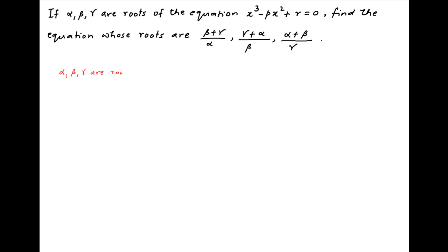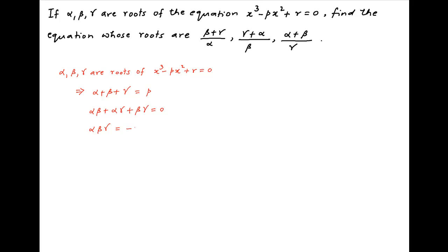We are given that alpha, beta and gamma are roots of the equation x³ - px² + r = 0. Therefore, the sum of the roots alpha + beta + gamma = p. The sum of the roots taken two at a time, alpha·beta + alpha·gamma + beta·gamma = 0, because the coefficient of x is 0. Finally, the product of the roots alpha·beta·gamma = -r.